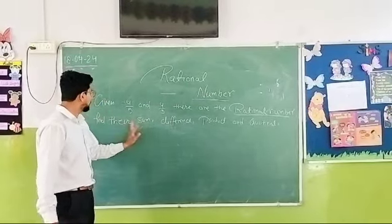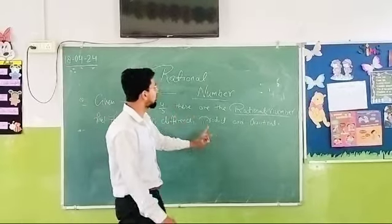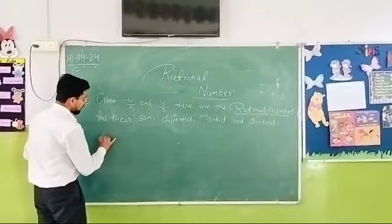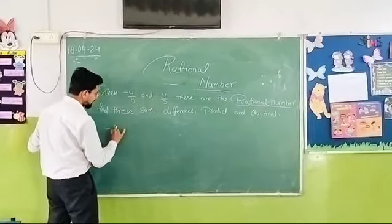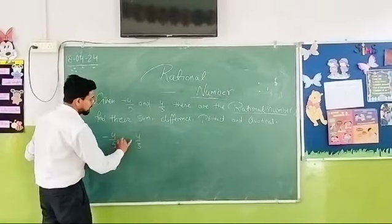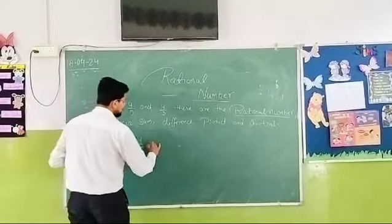Like, we have to find their sum, difference, product and quotient. So first, we will do sum of these rational numbers: minus 4 upon 5 and 4 upon 3. So what is the meaning of sum? We have to add. We have to add. So how will we add?